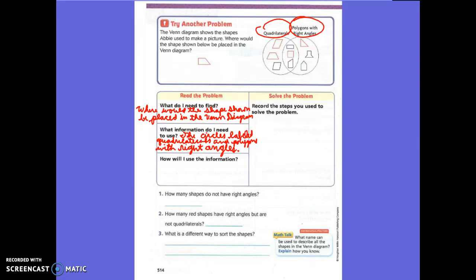It's not just about quadrilaterals anymore — it's about polygons too. You need to use what you know about two-dimensional shapes to find where the shape should go. I will use what I know about two-dimensional shapes to find where the shapes should be placed.